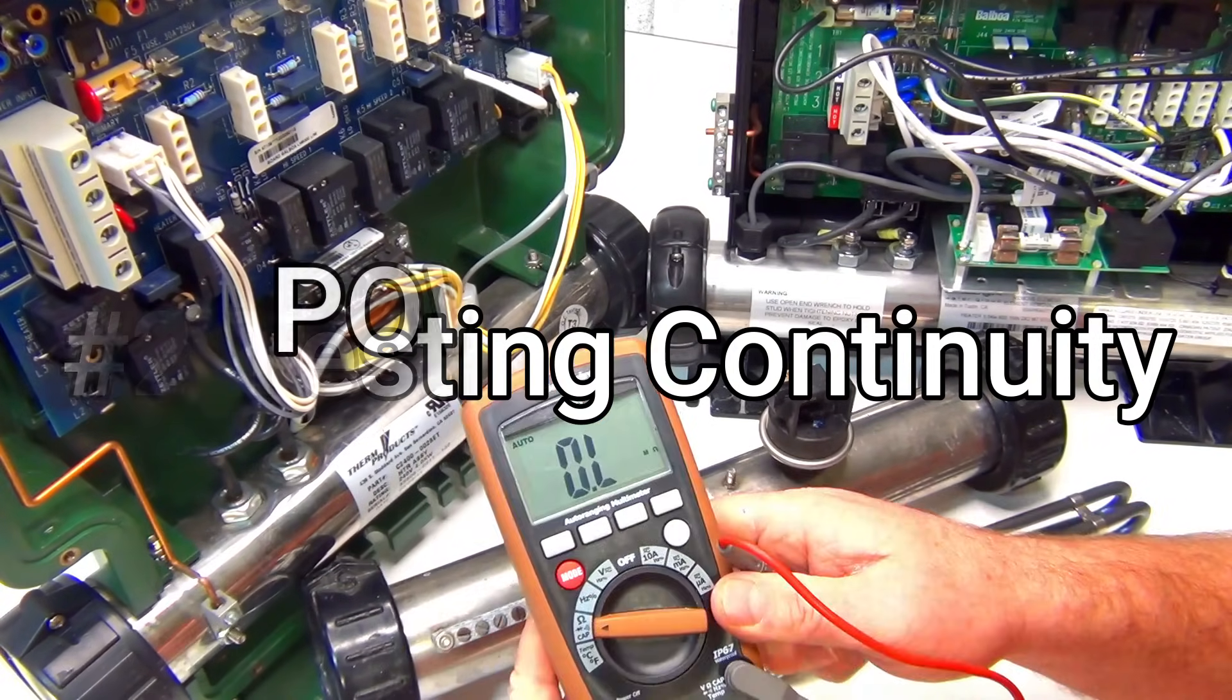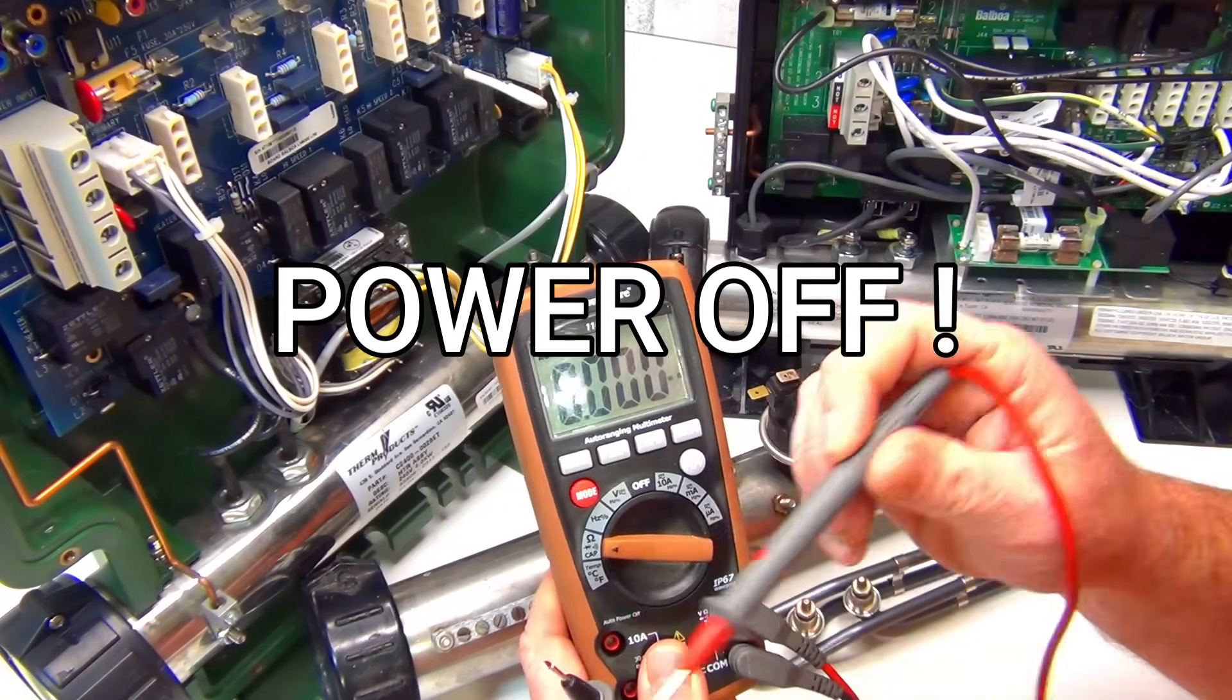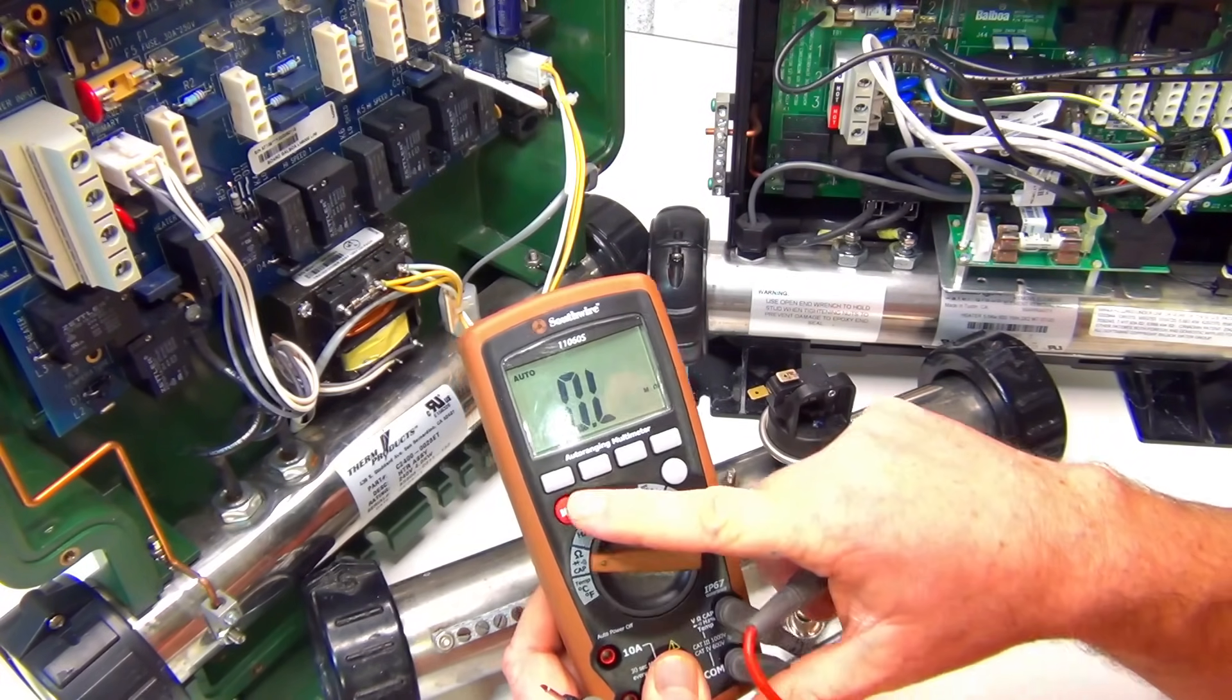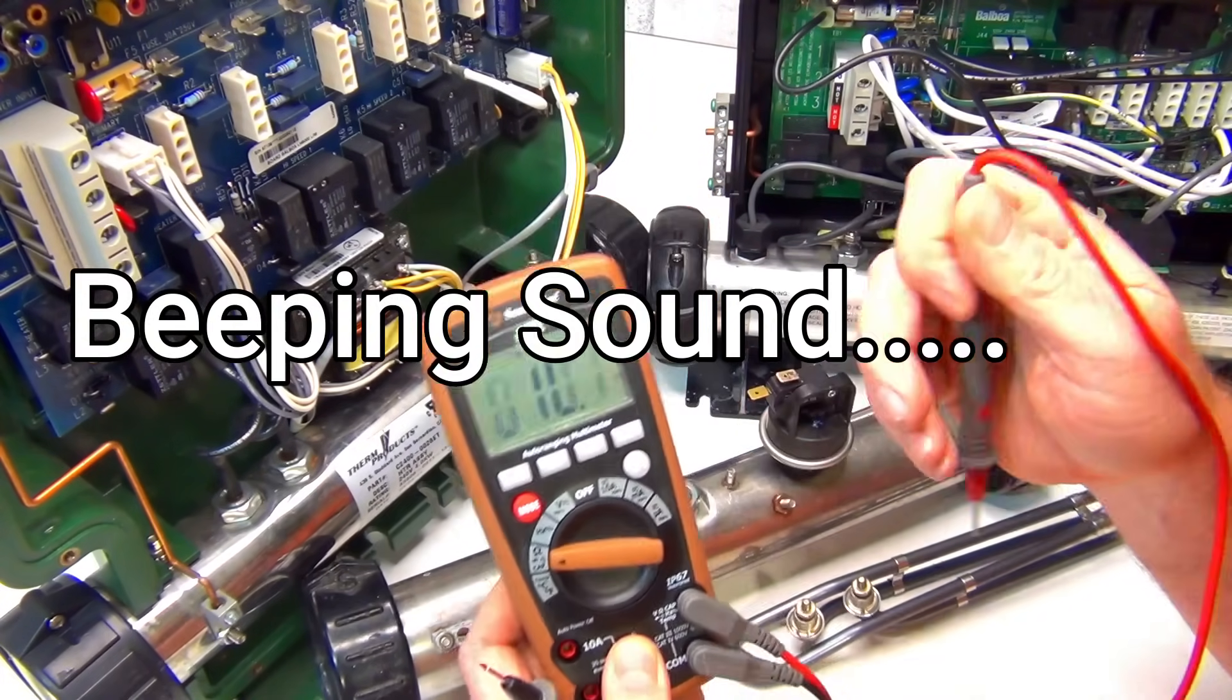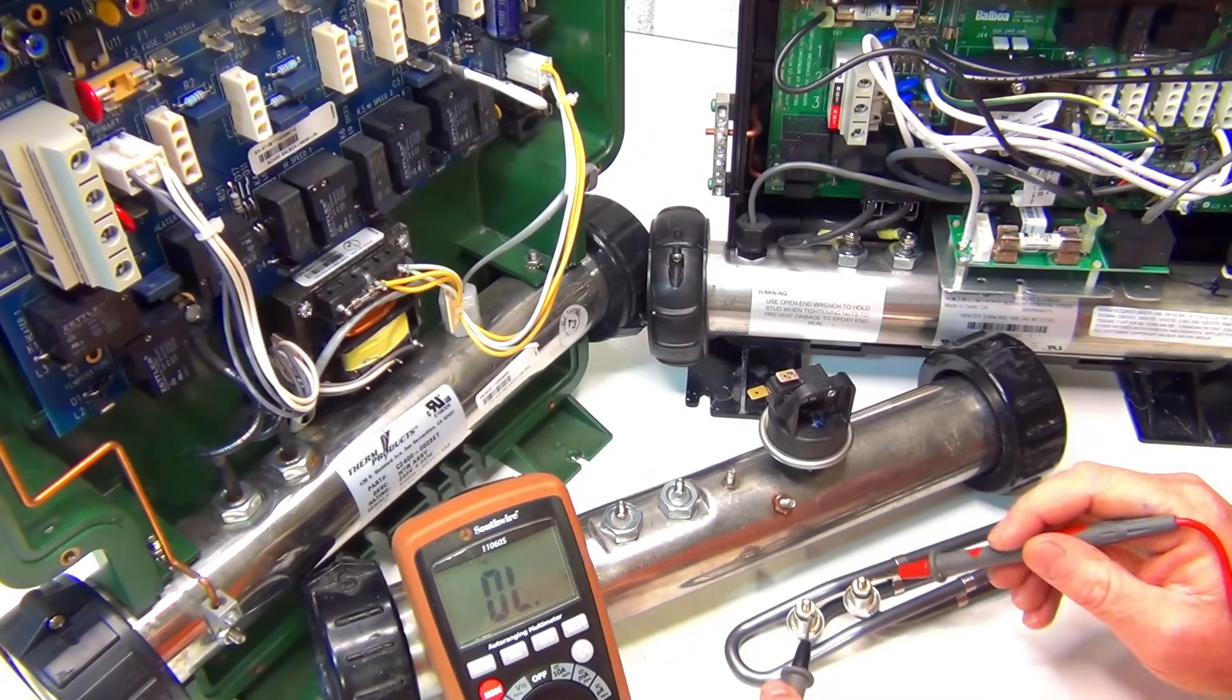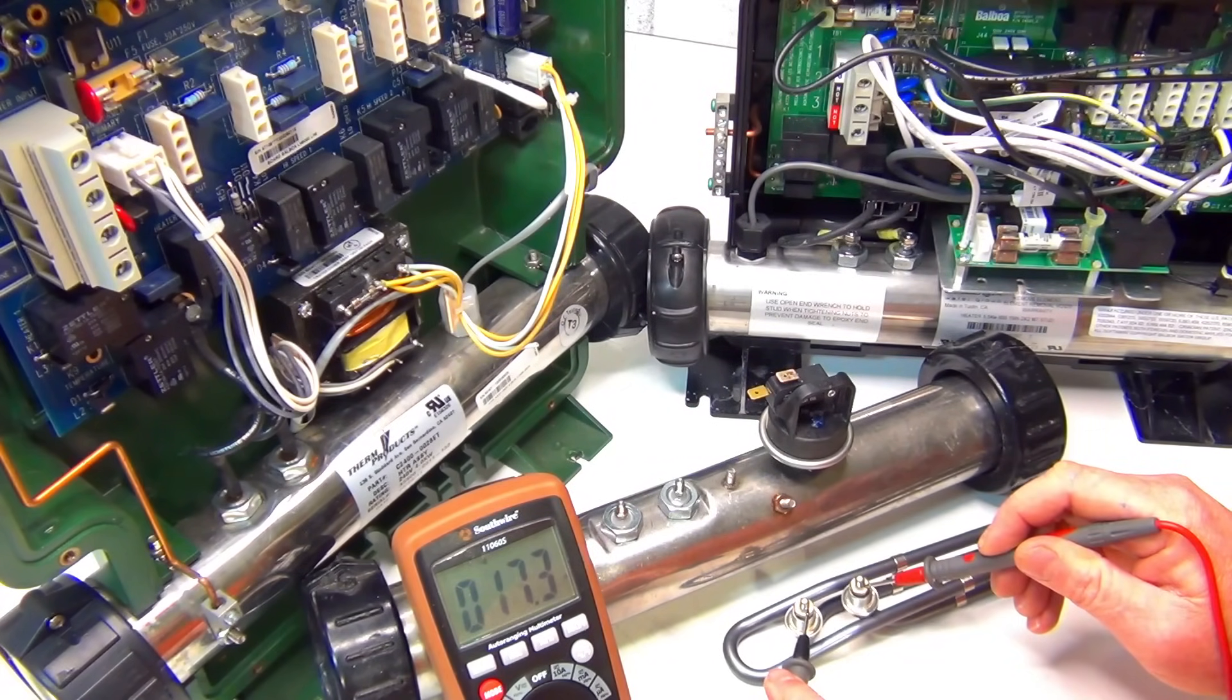So we're going to test continuity now. For continuity, for my meter anyway, the two leads touch and you get that beep. So I'm going to keep it at the ohm symbol and the continuity. So we put together, you hear a beep. I'll show you what it looks like here. So we test the element, should beep, and it should go between 10 and 11.